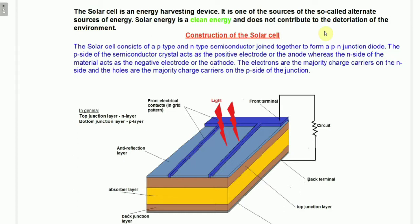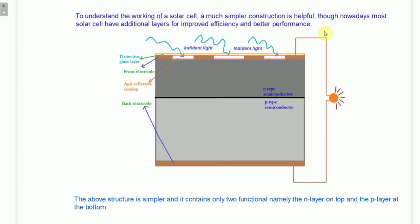The diagram here depicts the structure of most modern-day solar cells employed in a wide variety of applications. This one has an additional absorber layer separating the top junction layer, which is the N layer, and the bottom junction layer, which is the P layer. These buffer layers can actually improve the performance of the solar cell, but in order to understand the simple working of the solar cell, we can deal with the simpler structure where an N-type and a P-type semiconducting material are fused together to form a P-N junction diode.